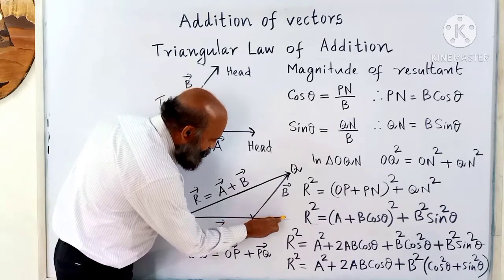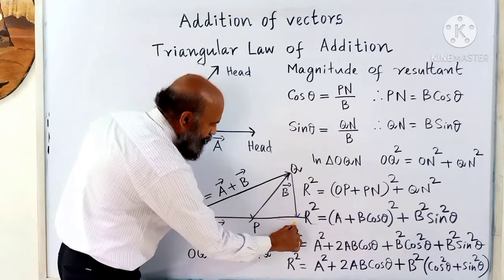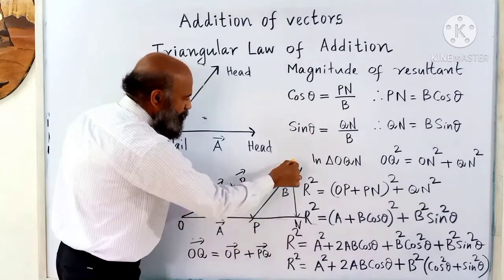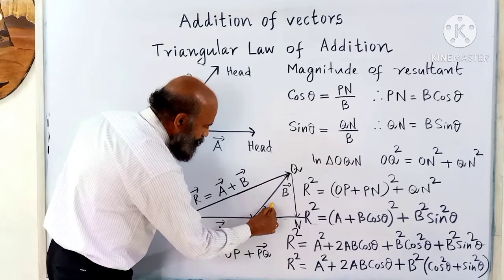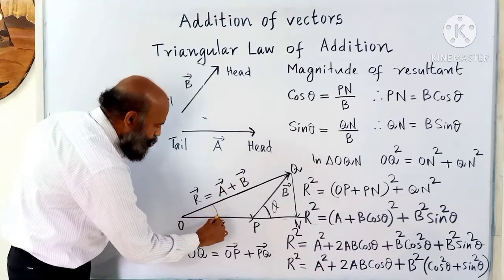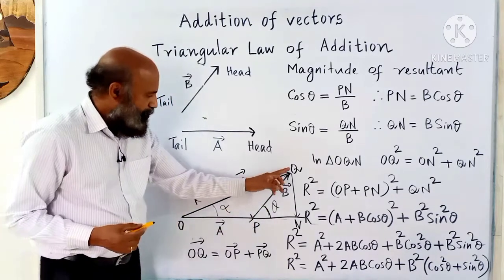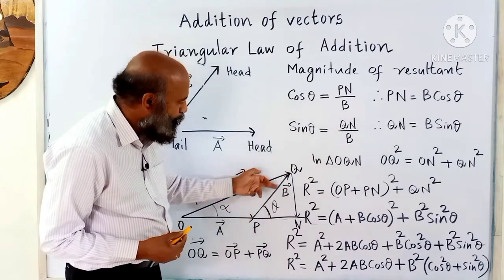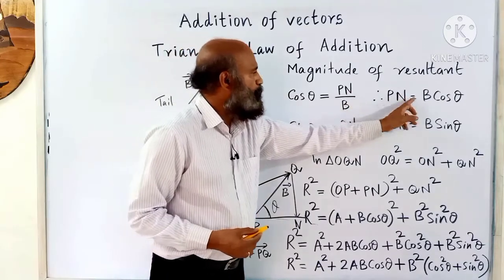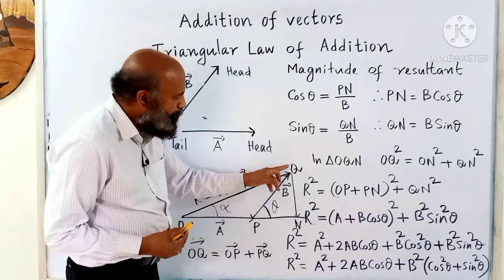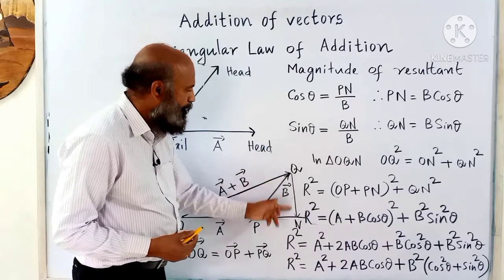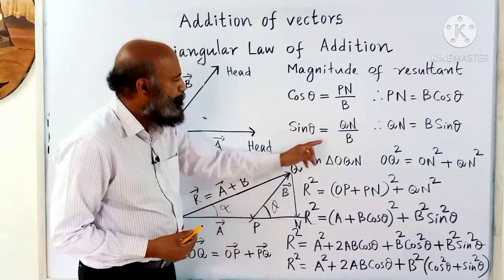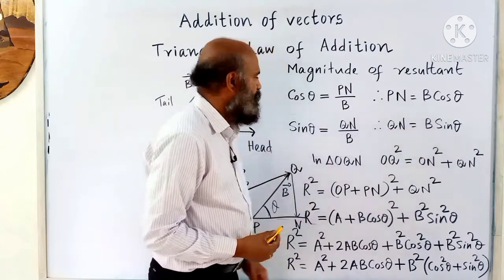Extend this side, then from Q drop a perpendicular. The angle between vector a and vector b is theta. The resultant makes an angle alpha with the direction of vector a. In the small triangle, cos theta equals PN divided by b (the modulus of b), so PN equals b cos theta. Similarly, sin theta equals QN divided by b, so QN equals b sin theta.